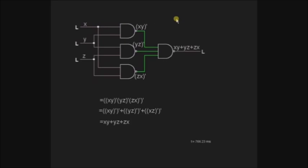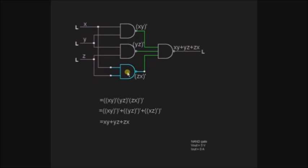AND gate output can be a product of two inputs. Here, I am connecting x and y inputs to the first NAND gate, and y and z inputs to the second NAND gate, and z and x inputs to the third NAND gate. The outputs of these NAND gates are xy whole bar, yz whole bar, and zx whole bar — nothing but the NAND gate outputs.